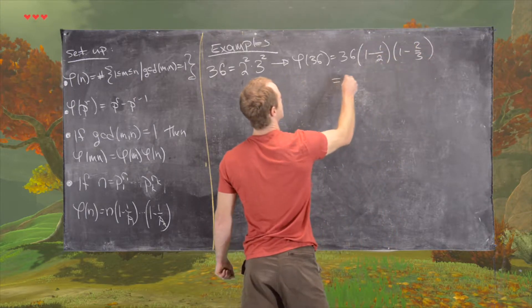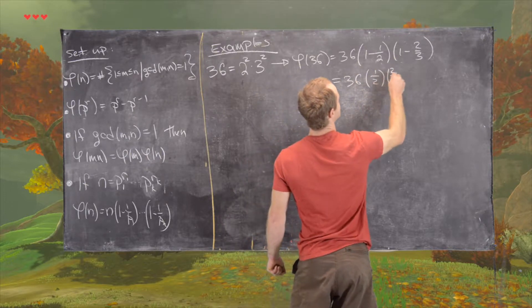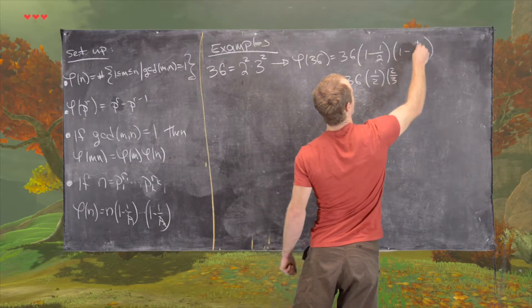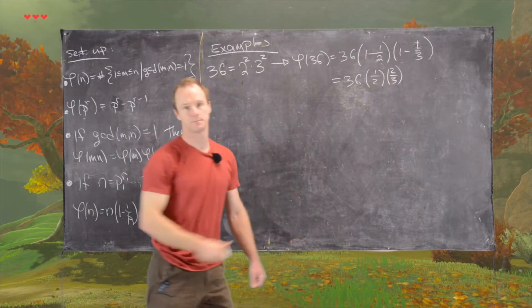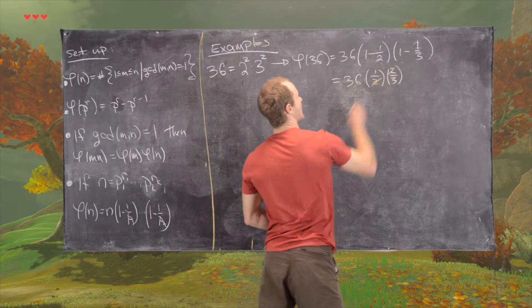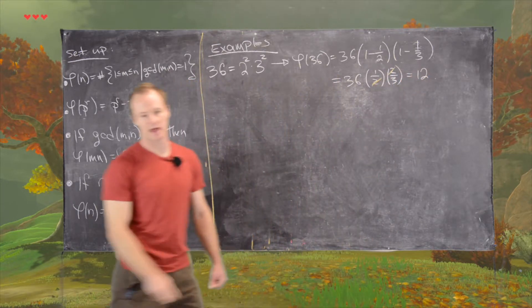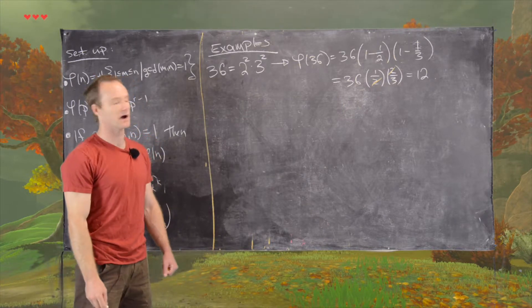So that's going to be 36 times a half times 2 thirds. Sorry, that should be 1 third. I was getting ahead of myself. And then as you can see we can cancel that, and then 36 over 3 is 12. So we have phi of 36 is 12.